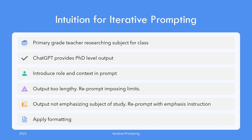You realize that you are not specific enough and need to bring role and context into the picture. So you instruct ChatGPT to act as a primary grade teacher and answer the same question. It does, and it's better but too long, and certainly not in a format you would be able to read out to a class of noisy children. So you ask it to limit it and emphasize certain areas of the output. Finally it's getting there. Now you add another instruction to format it as a bulleted list of points. Yeah, finally you have what you needed.